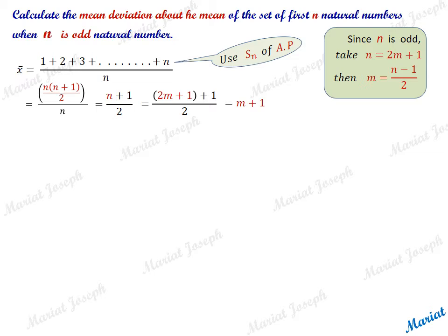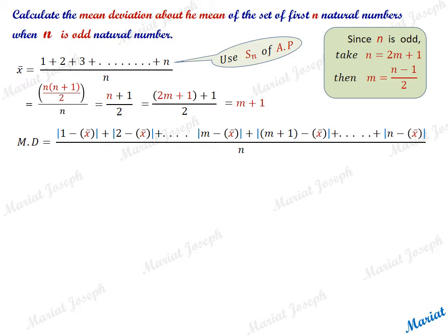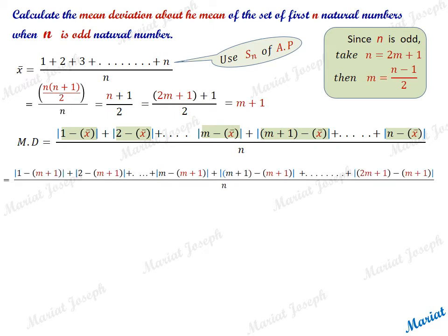The value m plus 1 is somewhere in the middle of the observations 1 to n. To calculate the mean deviation, we take the deviations of each observation from the mean: |1 minus x̄|, |2 minus x̄|, and so on, up to |m minus x̄|, |m+1 minus x̄|, and |n minus x̄|. Substituting x̄ as m plus 1, we get |1-(m+1)|, |2-(m+1)|, ..., |m-(m+1)|, |m+1-(m+1)|, ..., |2m+1-(m+1)|.